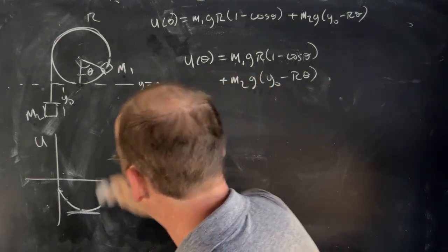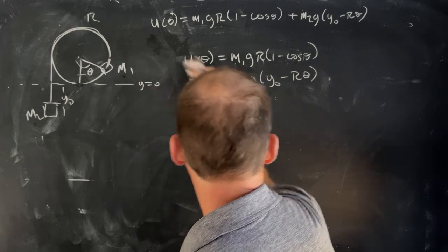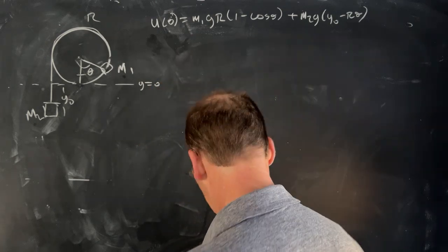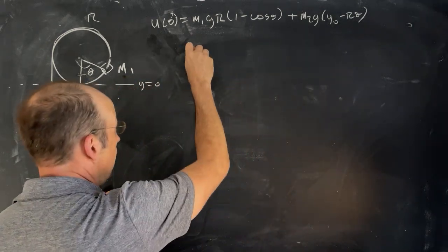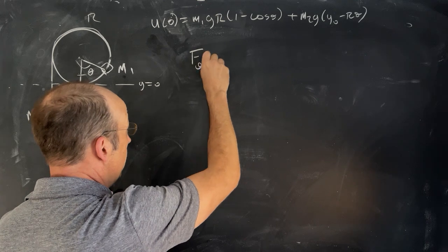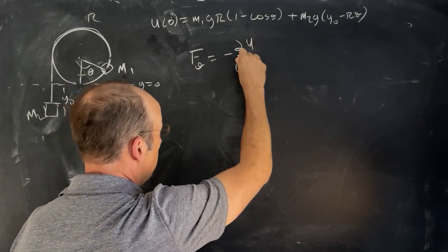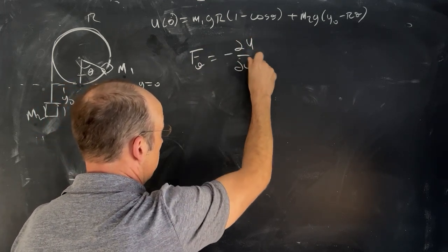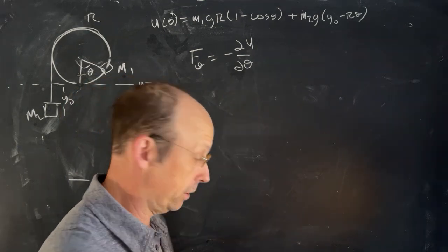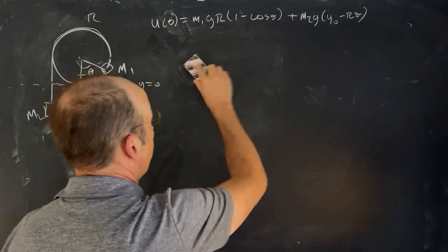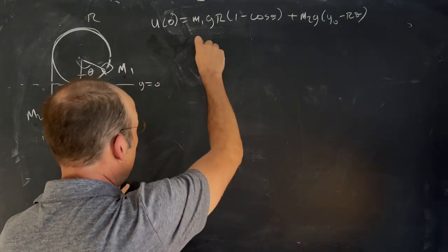So we can take the derivative of this function with respect to theta. We can say F theta is negative the partial of U with respect to theta. Now that's not a force, right? Because it's going to have the wrong units. And it's just too big. Sometimes it gets too big.